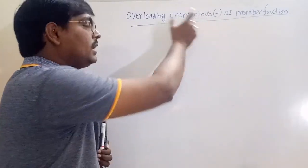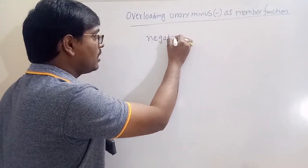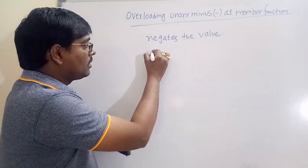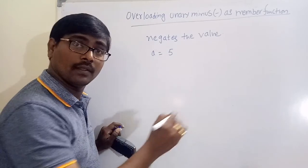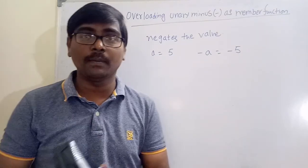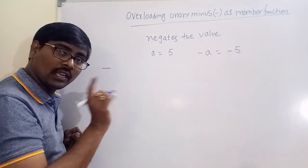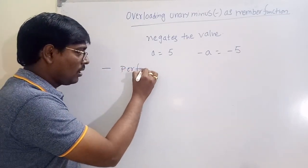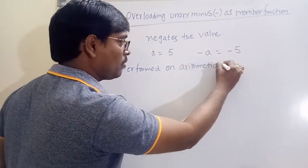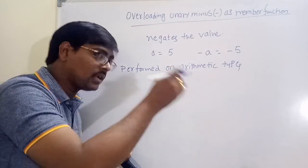Before going further, what is unary minus? Unary minus simply negates the value. For example, if a is equal to 5, then minus a is equal to minus 5. This is unary minus. Up to now, unary minus is performed on arithmetic types — that means normal integers, floats, etc.